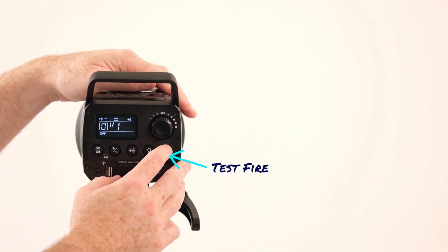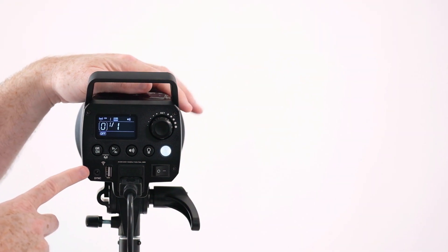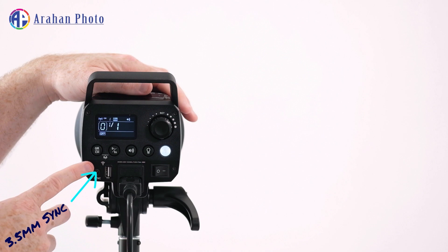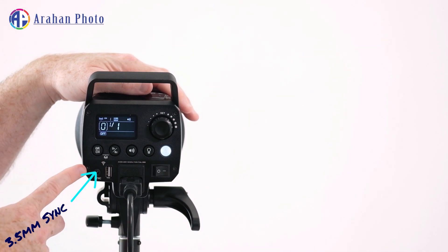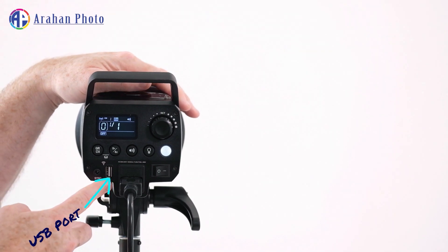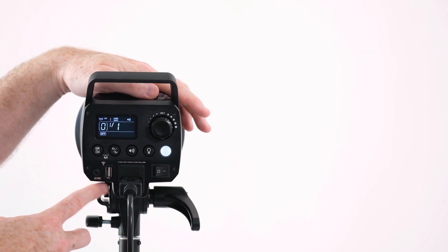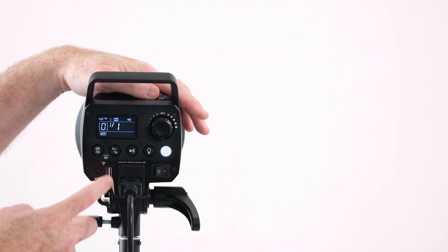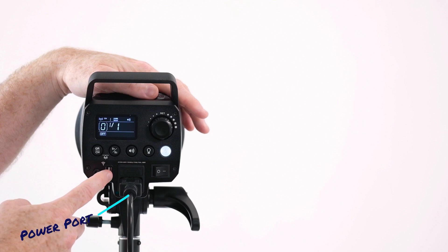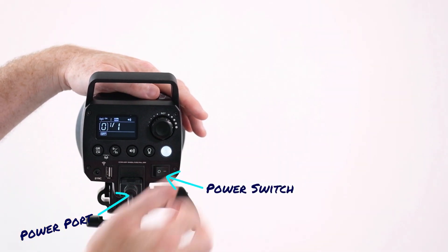This is a sync connector here—a three and a half millimeter sync connector, much better than the PC sync type connectors that have traditionally been used with flash. There is a USB connector on this. This has built-in radio triggering, but if you want to use one of the older style FT16 triggers, you can plug the receiver into this. Power cord of course, on-off switch. Pretty basic setup on the back for a studio strobe.